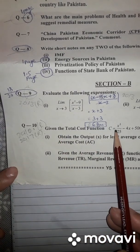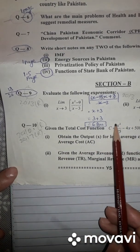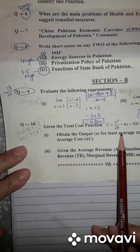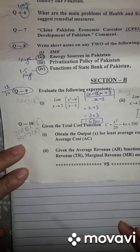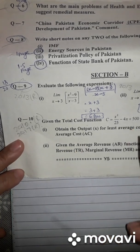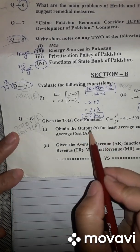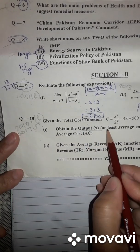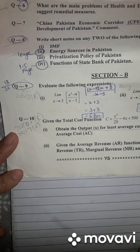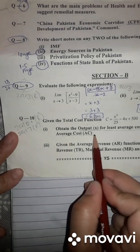Given the total cost function, total cost is given. Number 1, you have to obtain the output X for at least average cost and the least value of average cost. You have to find first of all two things: output X for least average cost and the least value of average cost.